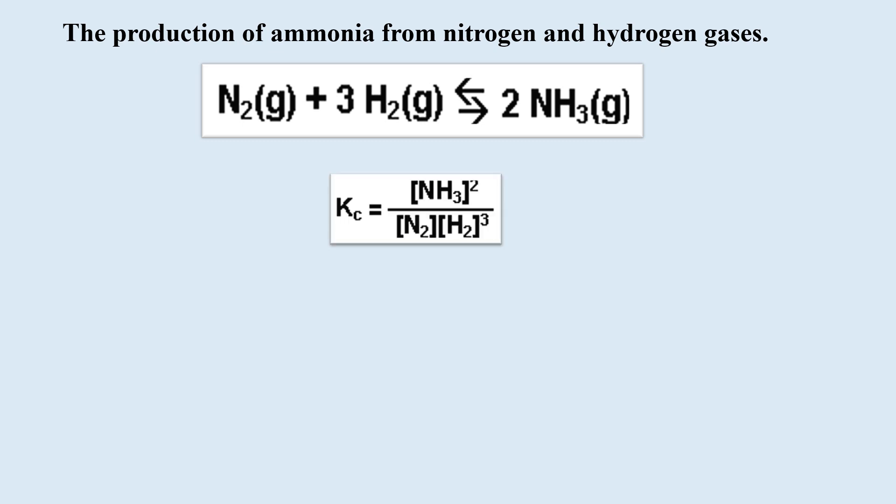So, the equilibrium expression for this reaction is written as follows. KC is equal to the concentration of ammonia NH3 squared divided by the concentration of nitrogen gas times the concentration of hydrogen gas cubed.